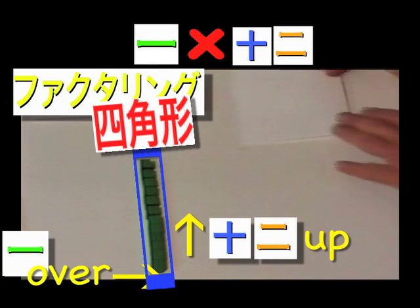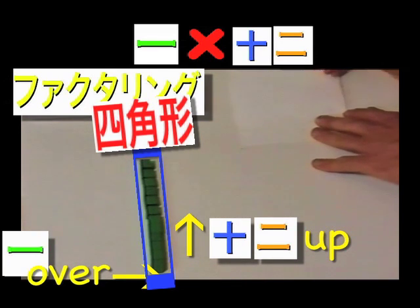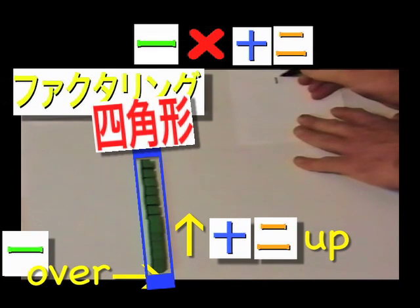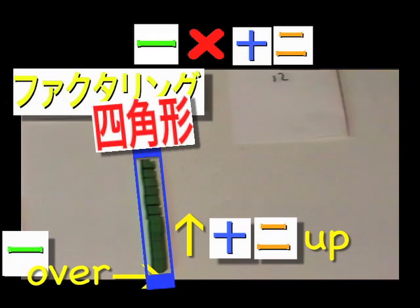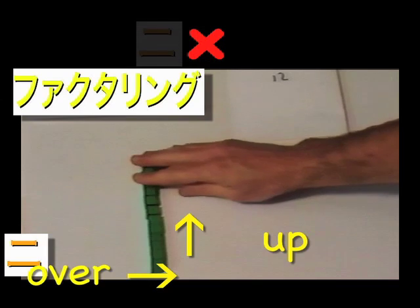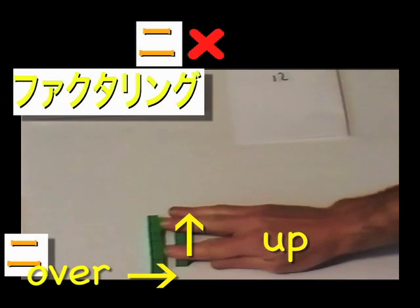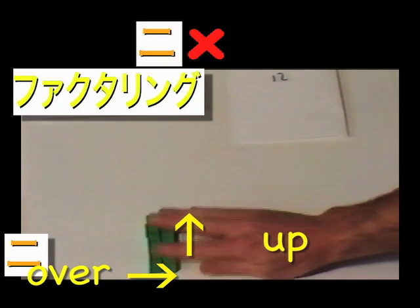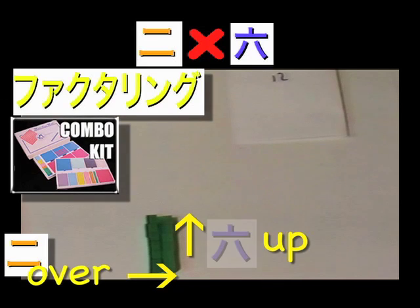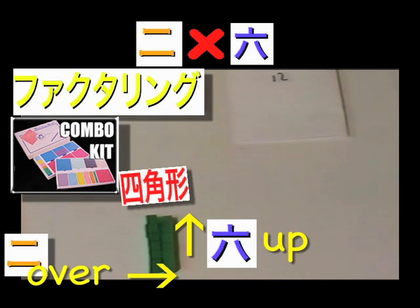Let's see if we can build a rectangle using 12 that is 2 wide. Yes, we can. We can build a rectangle using 12 that is 2 wide. Here again, we factored 12.